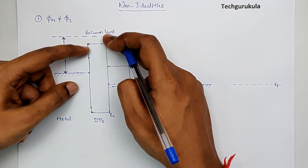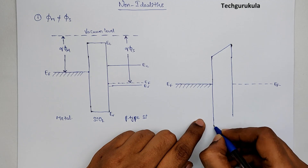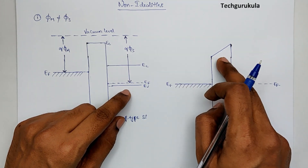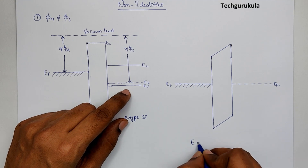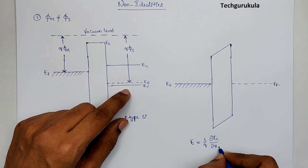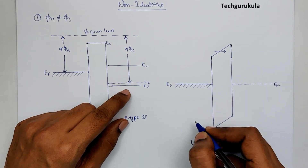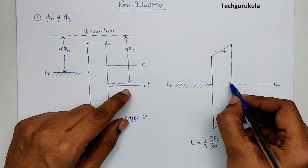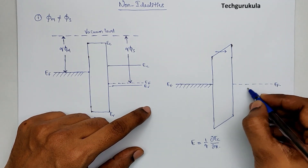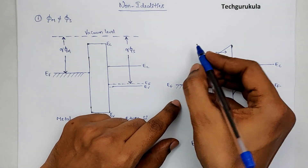In equilibrium, the entire MOS capacitor would still be charge neutral. Drawing the energy band diagram with Fermi energy levels aligned — EF in metal and EF in the semiconductor are the anchor points — the oxide band diagram tilts. Since the electric field inside a material relates to Ec as E = (1/q)(dEc/dx), the positive slope means electric field is in the positive x-direction, so the semiconductor bands also slope in that direction.